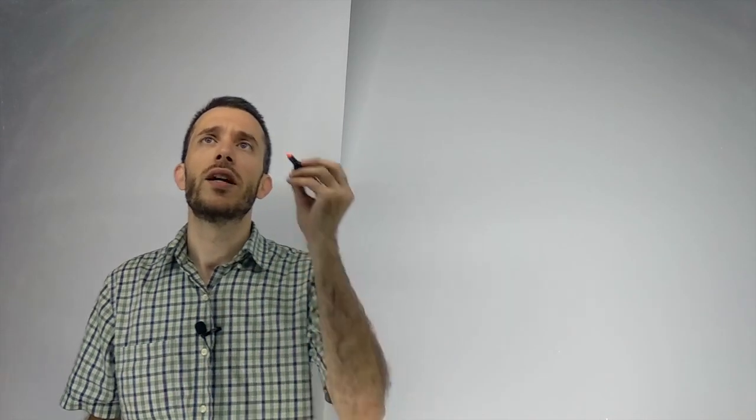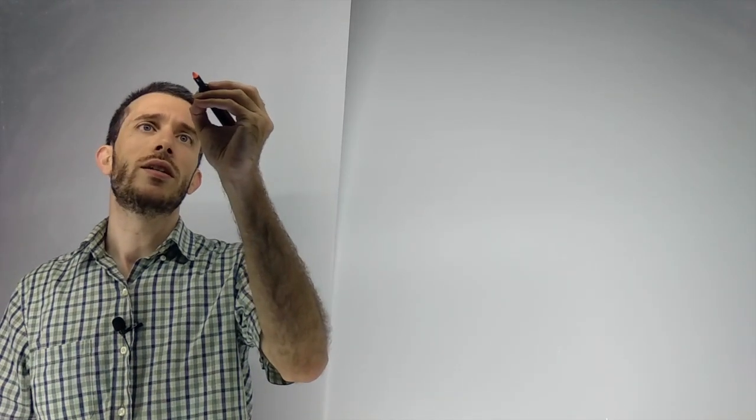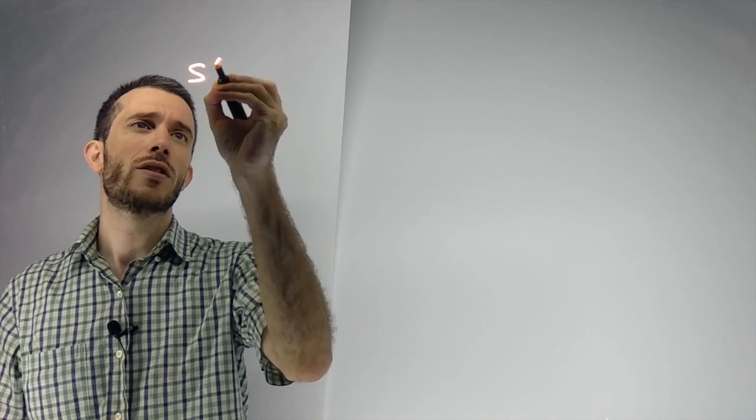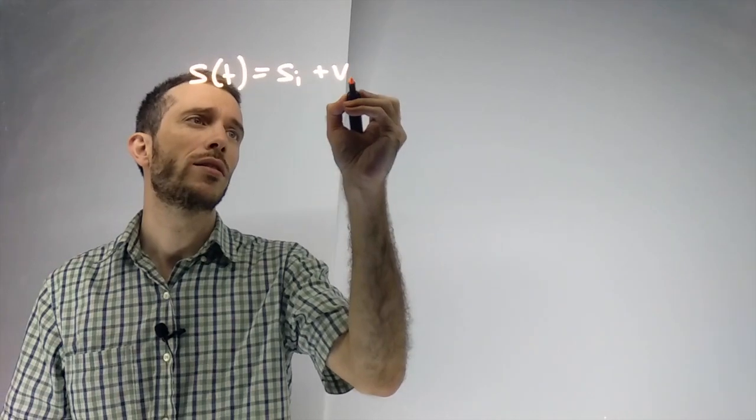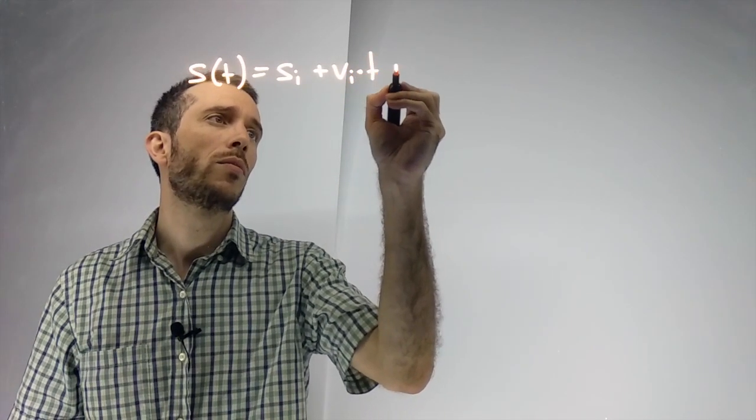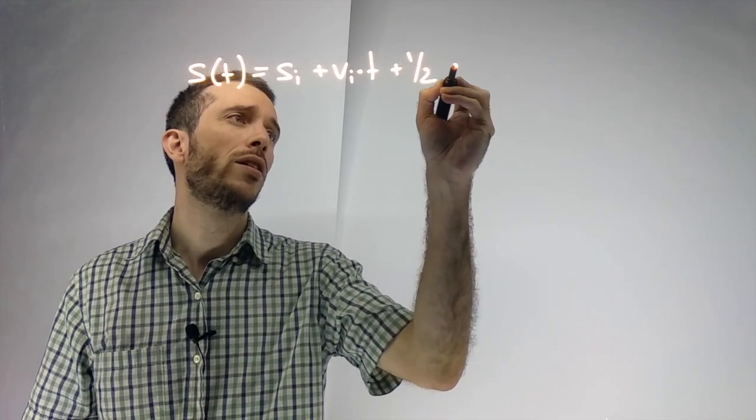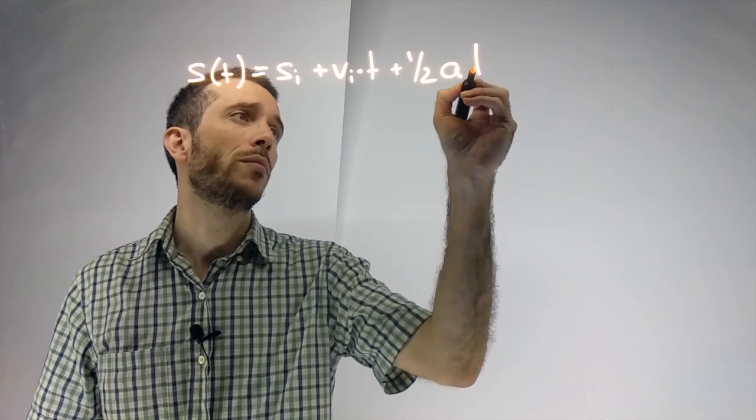In this video, I'm going to be looking at the main equation for constant acceleration, which is that the position as a function of time is the initial position plus initial velocity times time plus one-half acceleration times time squared.